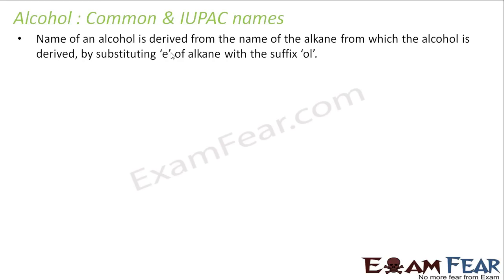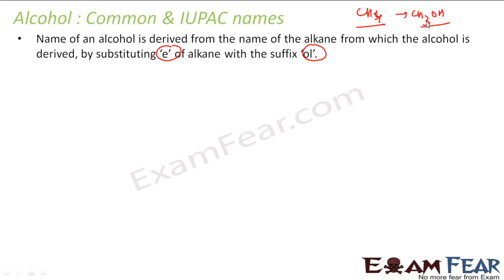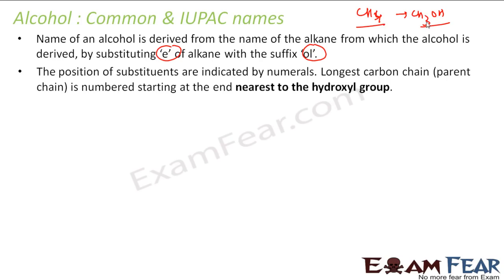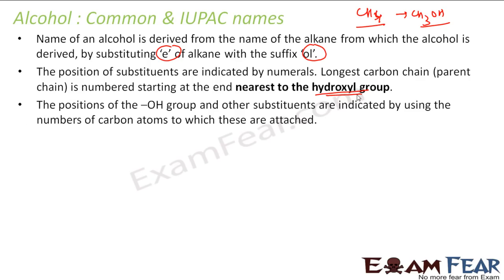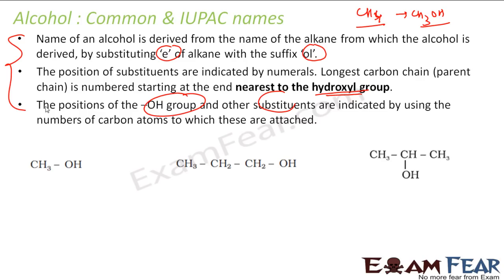We'll recap this once again. What you have to do is replace '-e' with '-ol'. So if you have the alkane from which you are getting the alcohol, for example methane, you replace one H and make it OH — you get CH3OH, so methane becomes methanol. You have to find the longest chain and start the numbering such that the hydroxyl group gets the lowest number, then give the positions of OH groups and other substituents.